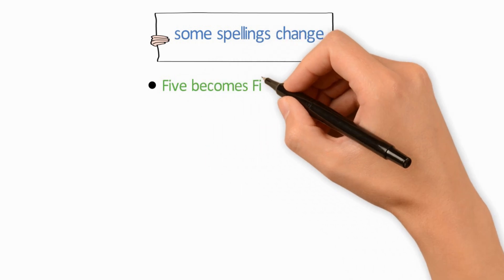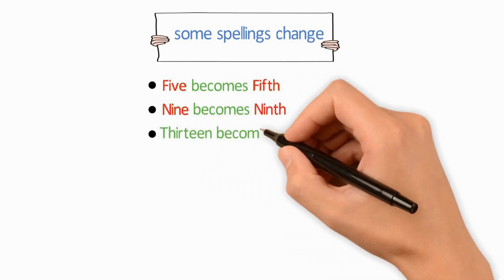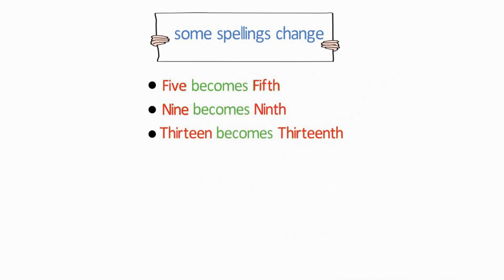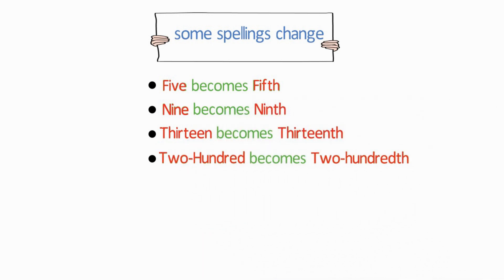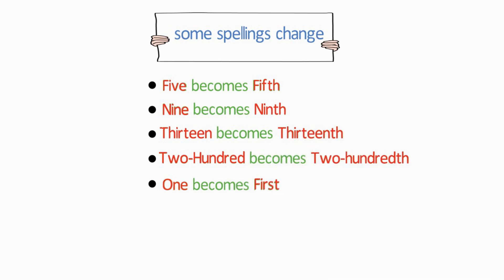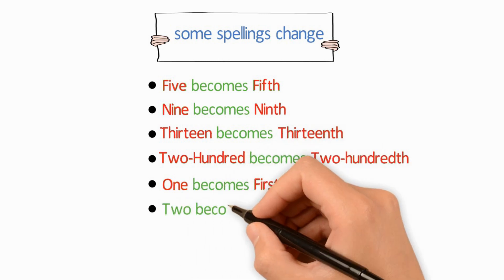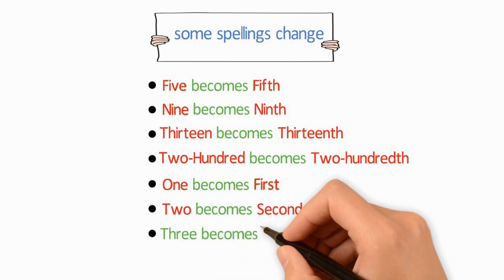5 becomes 5th. 9 becomes 9th. 13 becomes 13th. 200 becomes 200th. 1 becomes 1st. 2 becomes 2nd. 3 becomes 3rd.